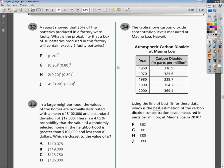Alright, this is the practice test for the Algebra 2 EOC, question number 34. I should say this is the first practice test because there's tons of them now. Anyway, the question says the table shows carbon dioxide concentration levels measured at Mauna Loa, Hawaii.